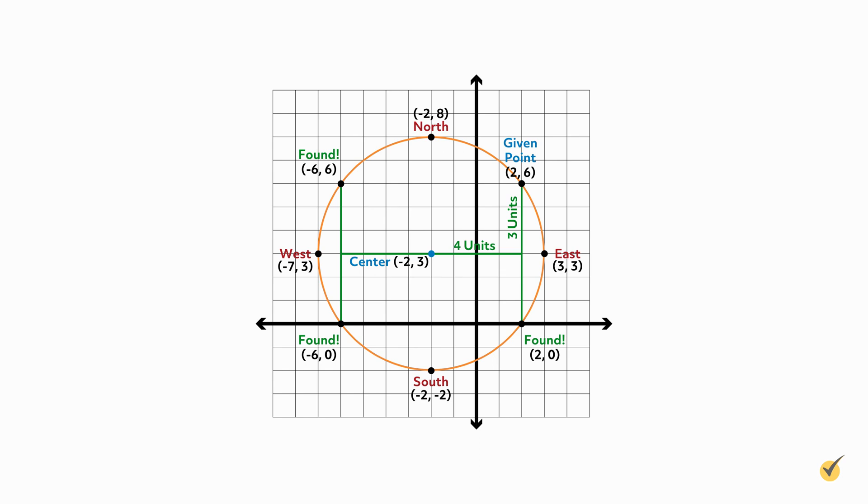And if we're willing to do some heavier math, we can find any of the infinite number of points on our circle. Since we're on such a roll, let's try that too. First we need to establish our domain so we can know what x values we can pick. The leftmost x value on our circle is our west point at -7. Our rightmost point is our east point at positive 3. So our domain is x is greater than or equal to -7 and less than or equal to positive 3. So we can pick any x value from -7 to 3 to find its corresponding y values on the circle. Yes, it's plural because there will be 2. So let's pick x equals -4 from our domain.